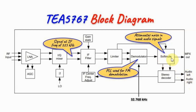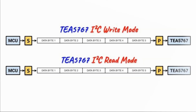The soft-mute circuit is used to attenuate noise in weak audio signals. The digital FM receiver is programmed by a microcontroller using I2C protocols. This is the write protocol, and this is the read protocol.